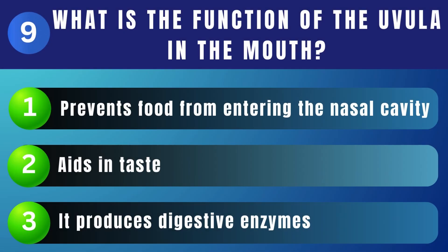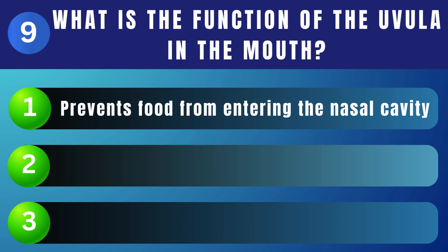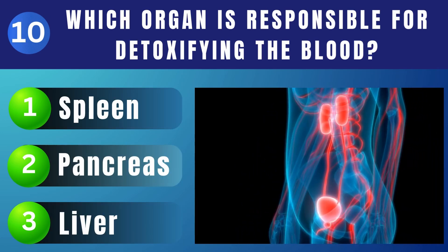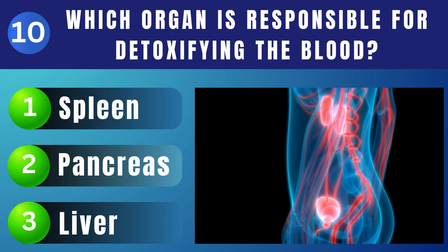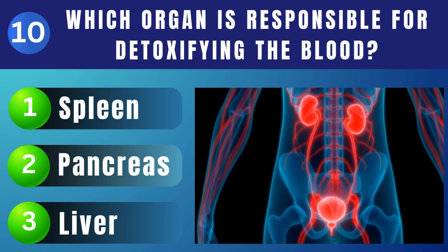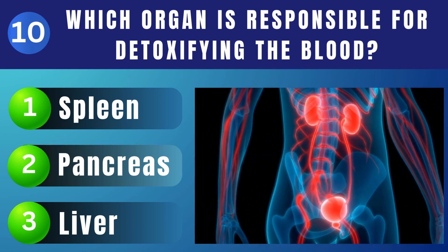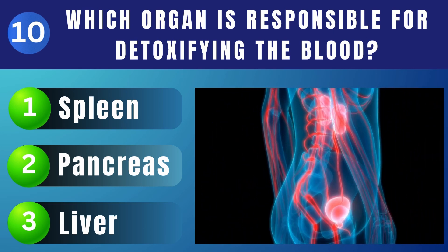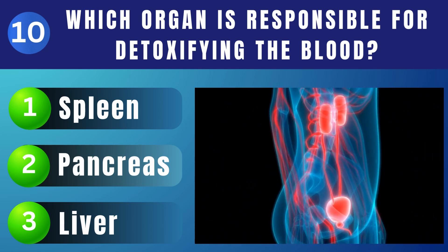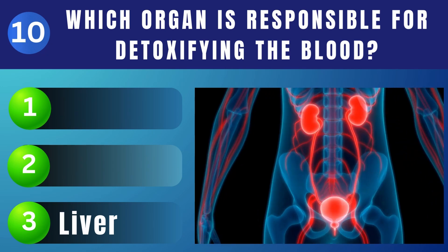What is the function of the uvula in the mouth? Prevents food from entering the nasal cavity. Which organ is responsible for detoxifying the blood? Liver.